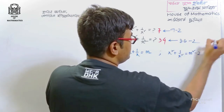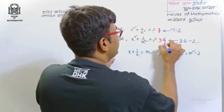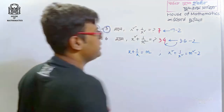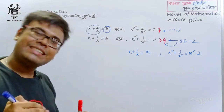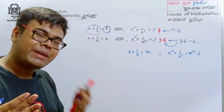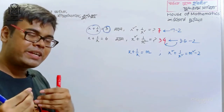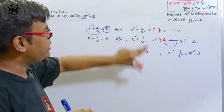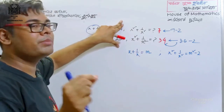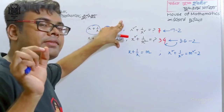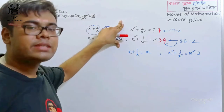36 minus 2 is 34, so the answer follows the formula. If we keep the answer, we apply the formula to get the answer.